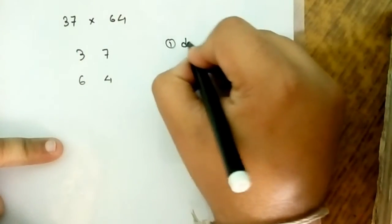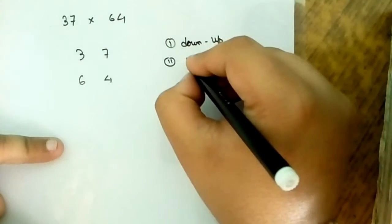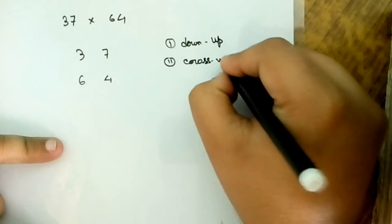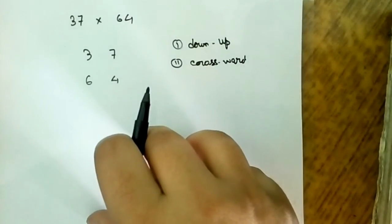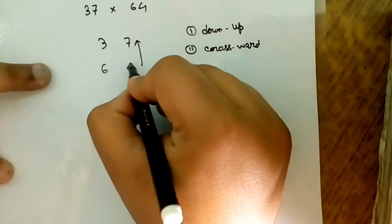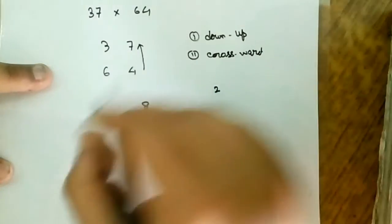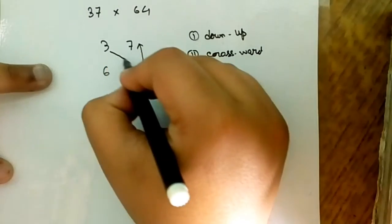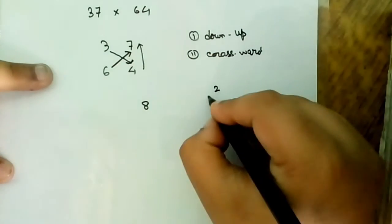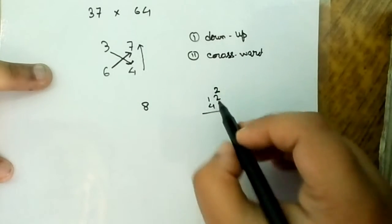What is the meaning of these words? Down to up means you have to first multiply this number with this number, means 4 into 7. 4 into 7 is 28, carry is 2. Now crossword means 3 with 4 and 6 with 7. 3 into 4 equals 12, 6 into 7 is 42.